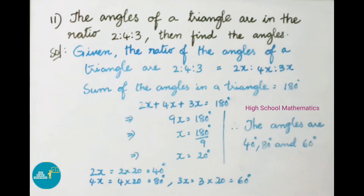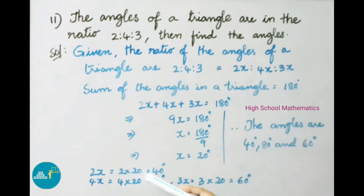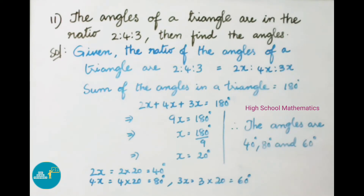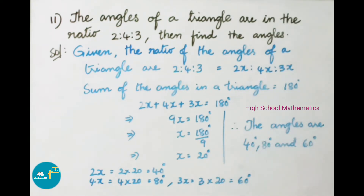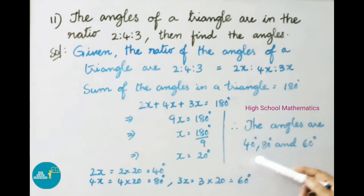Now let us find the angles. 2x equals 2 into 20, that is 40 degrees. 4x equals 4 into 20, that is 80 degrees. 3x equals 3 into 20, that is 60 degrees. Therefore the angles of the given triangle are 40 degrees, 80 degrees, and 60 degrees.